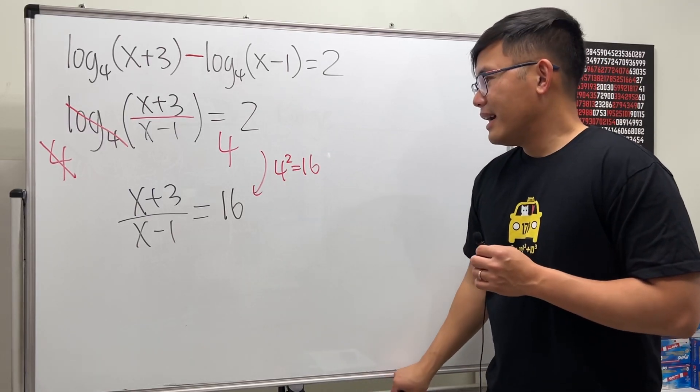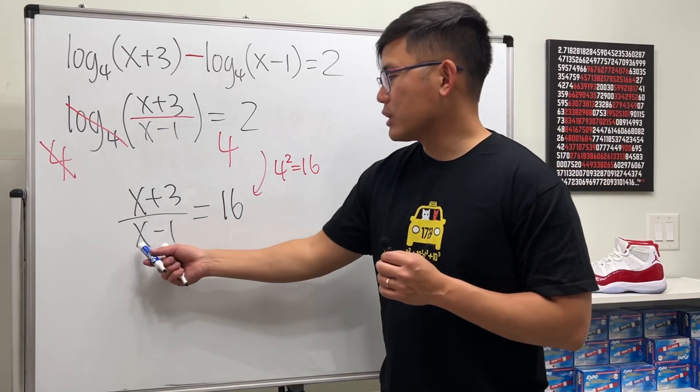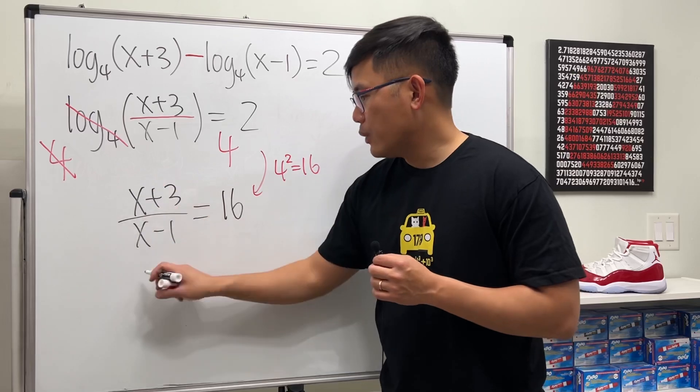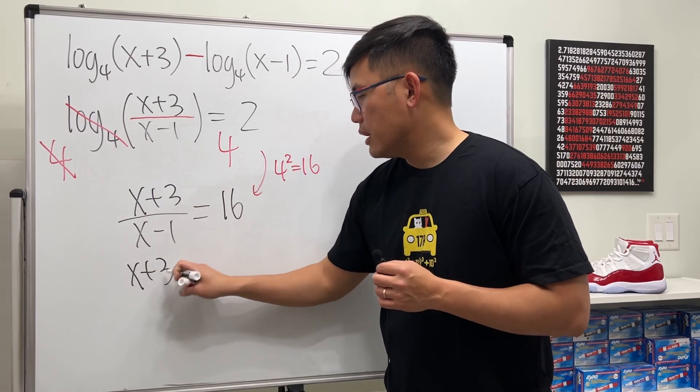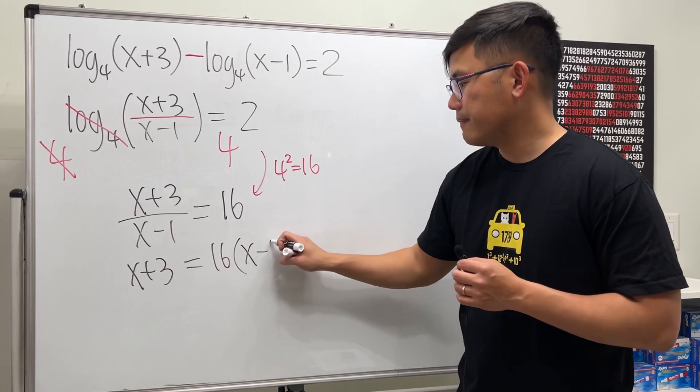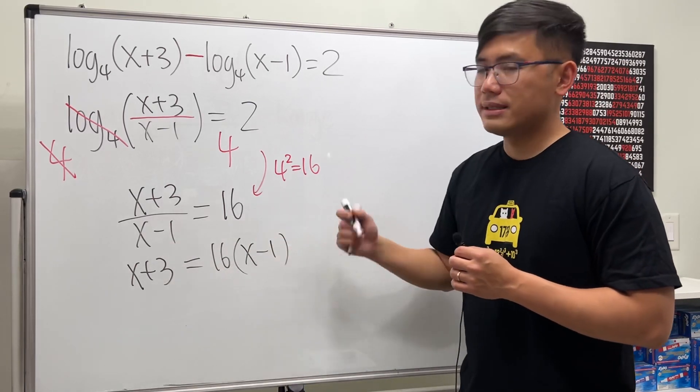Now, I'm going to multiply this on both sides. Here we get x+3 equals 16 times (x-1). Multiply this on both sides.